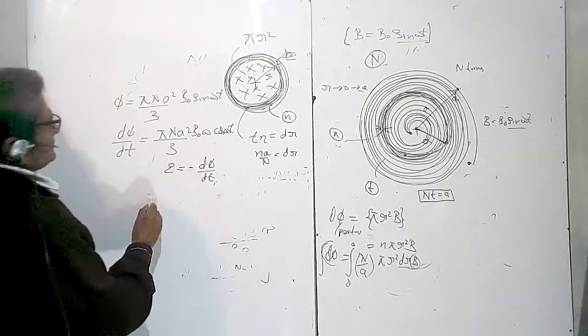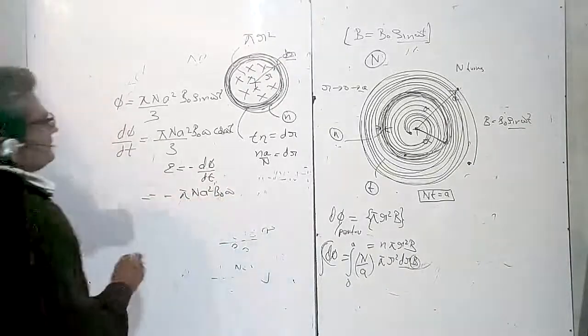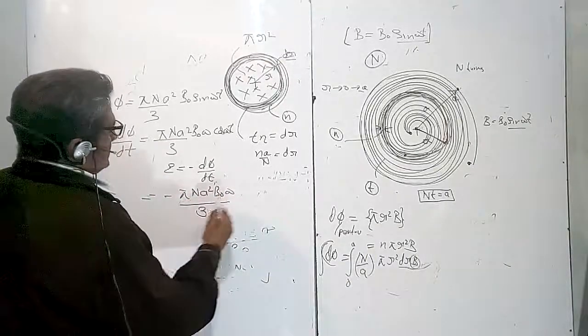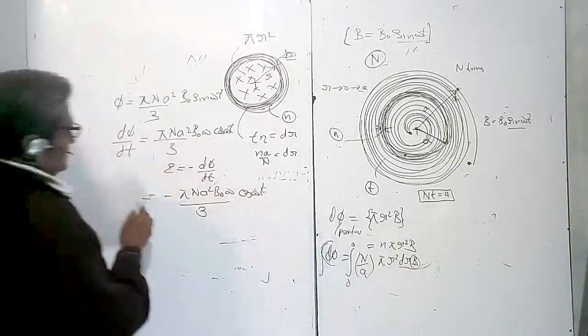My EMF is minus dΦ upon dt, so the induced EMF is minus dΦ upon dt, which equals minus πNA²B₀ω upon 3 cos(ωt). This is your EMF.